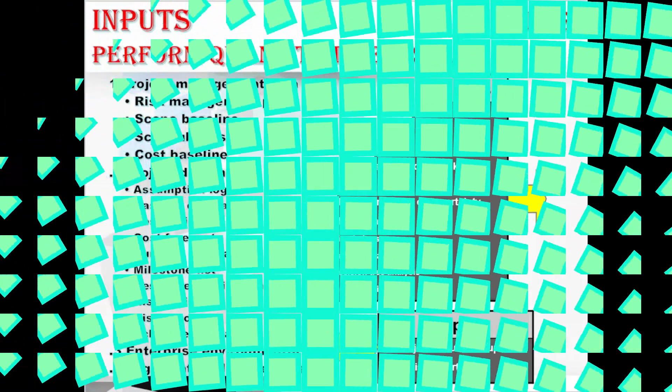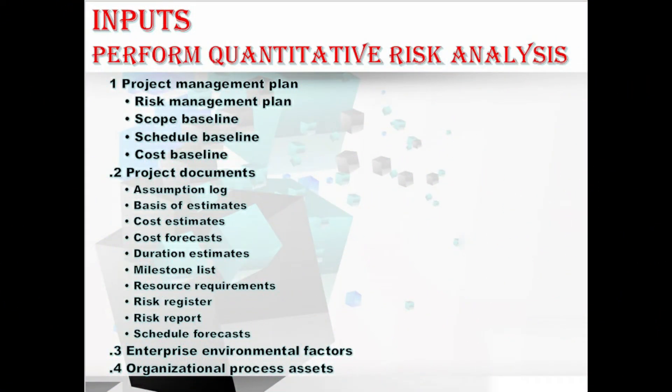Let's discuss the inputs in more detail. Starting with the project management plan, which consists of the risk management plan, scope baseline, schedule baseline, and cost baseline. The risk management plan specifies whether the quantitative risk analysis is required for the project or not. The scope baseline, schedule baseline, and cost baseline describe the starting point from which the effect of individual project risk and other sources of uncertainty are evaluated.